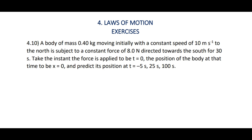Hello students, in this video we are going to discuss problem 4.10 from Laws of Motion. A body of mass 0.4 kilogram is moving initially with a constant speed of 10 meters per second to the north, and is subjected to a constant force of 8 newton directed towards the south for 30 seconds. The instant the force is applied is taken as t equals 0.